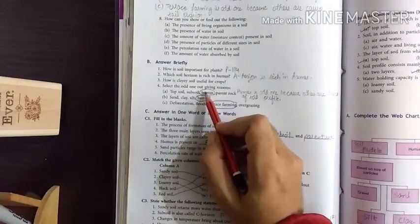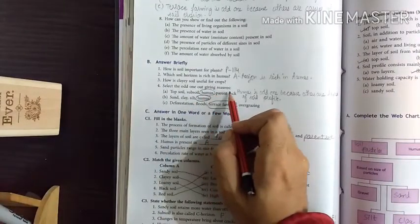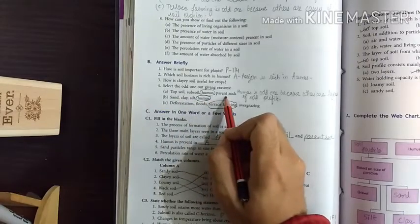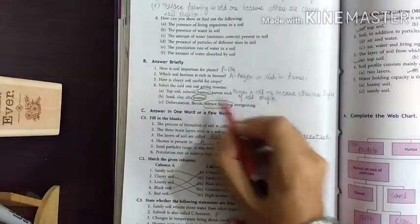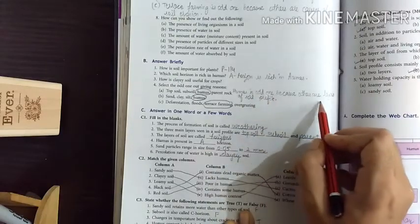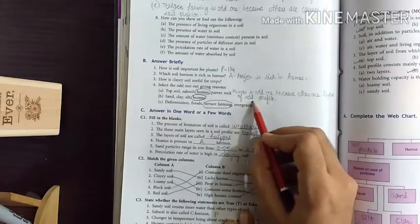Next question, question number 4. Humus is odd one because others are layers of soil profile.